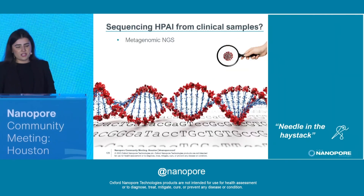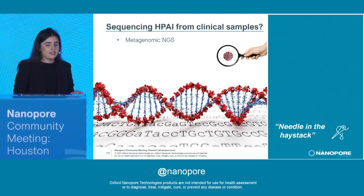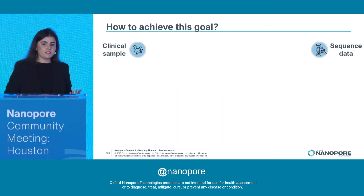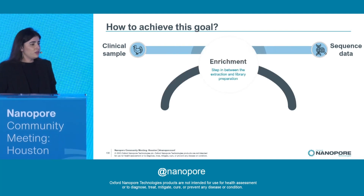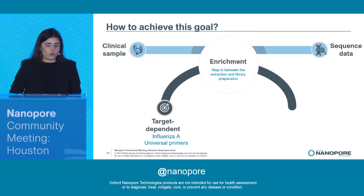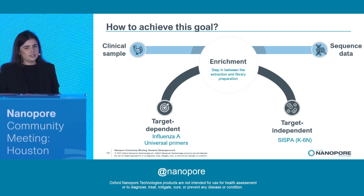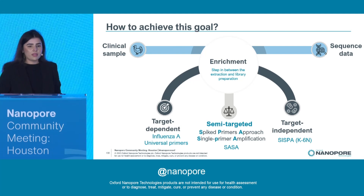As you can already imagine, sequencing the high path genome from a clinical sample full of host nucleic acid is basically trying to find a needle in a haystack. Therefore, to achieve our goal to get enough sequence data from a clinical sample, we need to do some kind of enrichment. For enrichment, we have different possibilities: a target-dependent enrichment using the influenza A universal primers, a target-independent enrichment using SISPA — that stands for sequence-independent single primer amplification — and recently, our group came up with a new method, a semi-target enrichment that we named SASA.